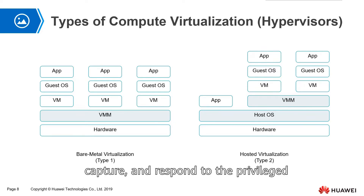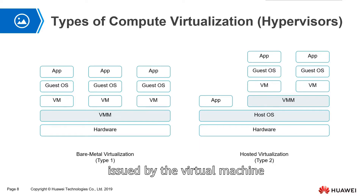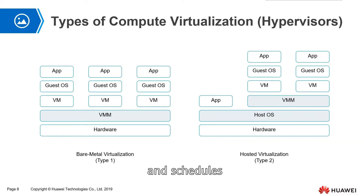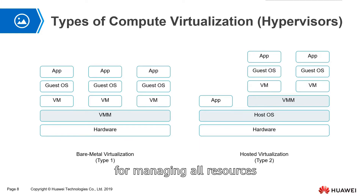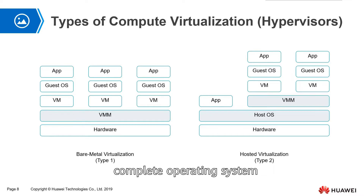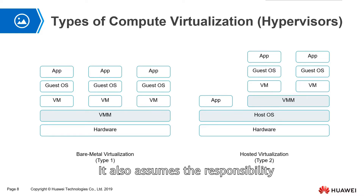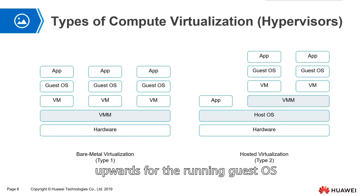The first function is to identify, capture, and respond to the privileged and protected CPU instructions issued by the virtual machine. The second function is to process virtual requests and schedules, and return the processing results of the physical hardware to the corresponding virtual machine. In other words, the hypervisor is responsible for managing all resources and virtual environments. The VMM can be a virtualized complete operating system that controls all resources including memory, CPU, and I/O devices, and provides virtual machines upward for the running guest OS.